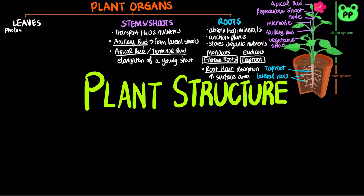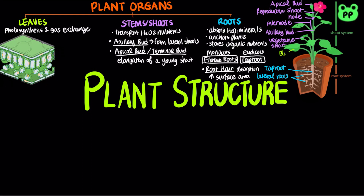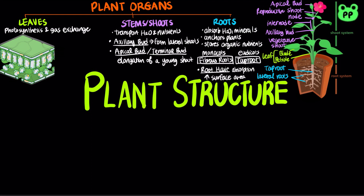Leaves function in photosynthesis and gas exchange. They generally consist of a flattened blade and a stalk called a petiole, which joins the leaf to a node of the stem. The outer layer of the leaf consists of a waxy coat known as the cuticle, which prevents the leaf from water desiccation.